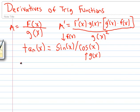So all we need now is f prime of x, which is the derivative of sine of x, so that would be cosine of x.